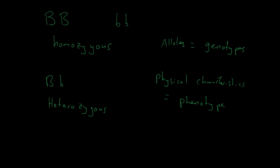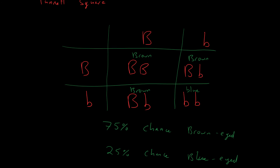Applying these terms to the Punnett square: the BB person and the bb person are both homozygous, whereas the two Bb individuals are heterozygous. However, these three people — BB and both Bb — all have a phenotype of brown eyes, whereas the person in the bottom right, with bb, has a phenotype of blue eyes. That's the difference between genotype and phenotype.